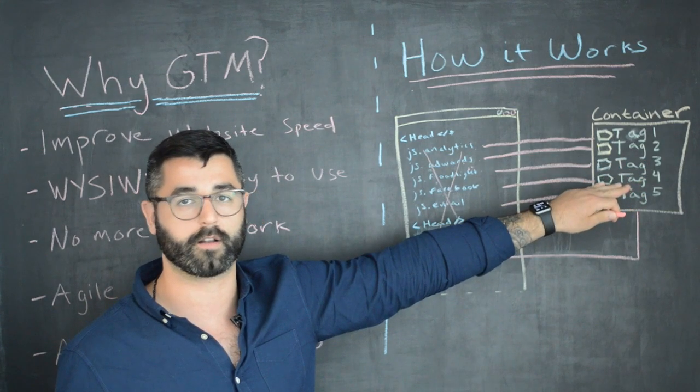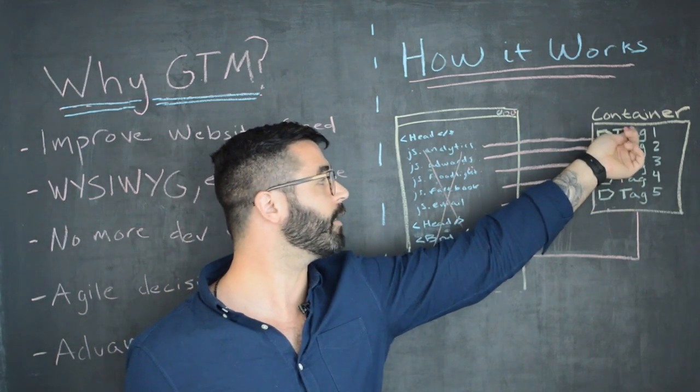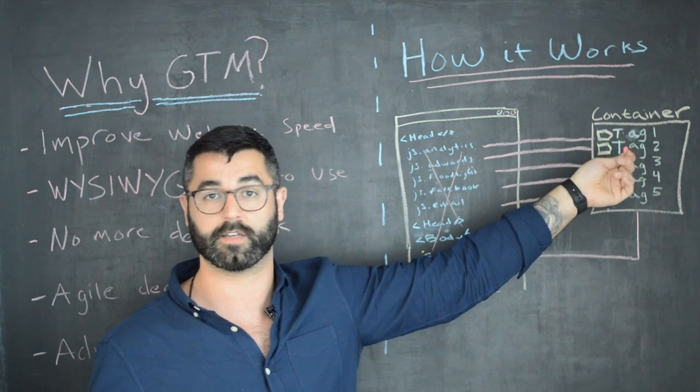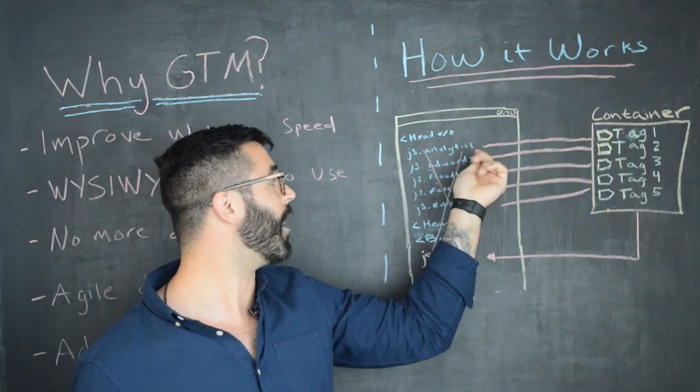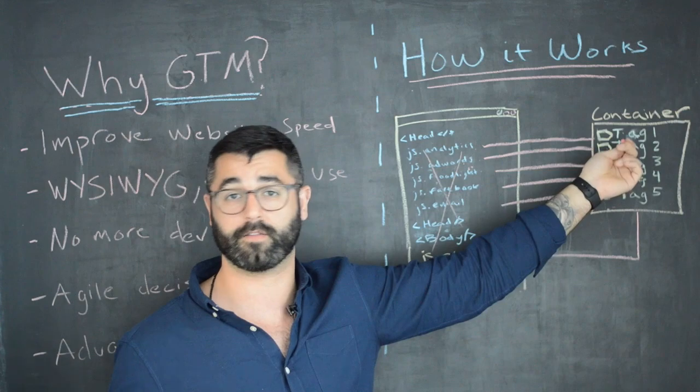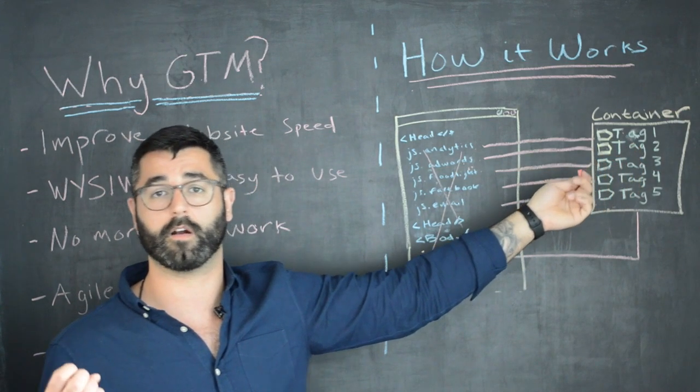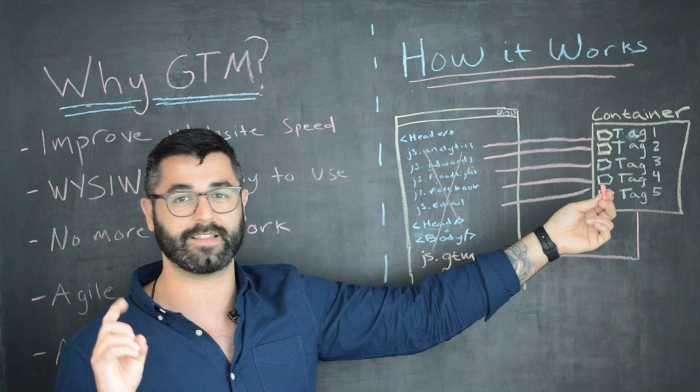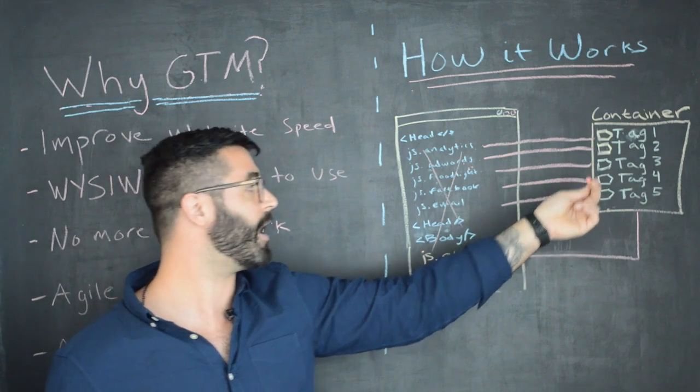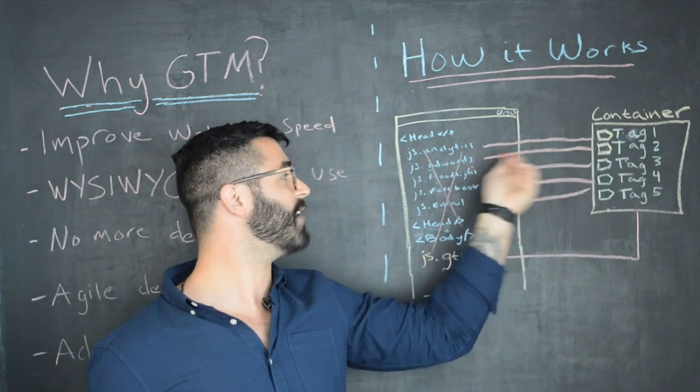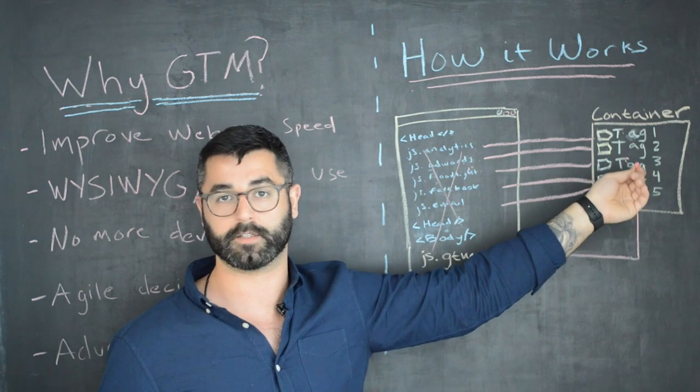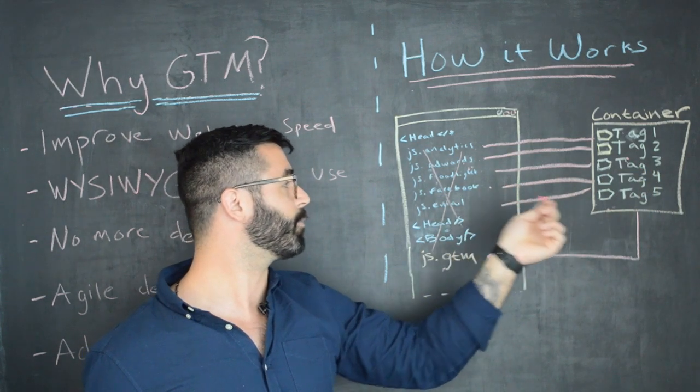For example, Google Analytics, you want to fire it on all pages because you want to track all pages. For AdWords conversions, you want to track it on your thank-you page, you want to track it on your checkout page. All these things, you just set these rules and you just tell it with a click of a button, 'Hey, I only want this tag to fire on a checkout page, I only want the Facebook pixel to fire on the thank-you page.'